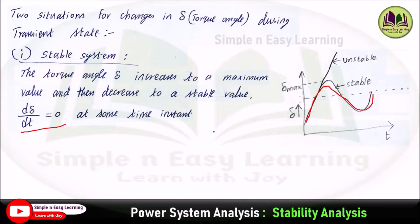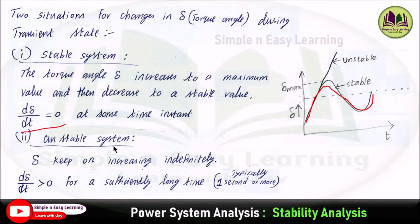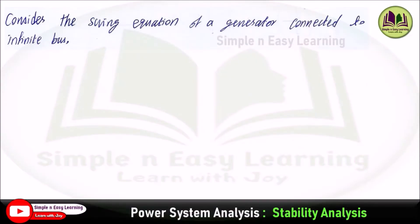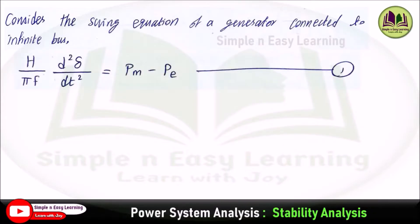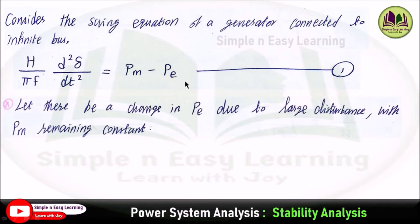In the second case, it is an unstable system — δ keeps on increasing indefinitely, so dδ/dt is greater than zero for a sufficiently long time, typically one second or more. Now consider the swing equation of a generator connected to an infinite bus bar: (H / πf) · d²δ/dt² = Pm − Pe. Take this as the first equation.